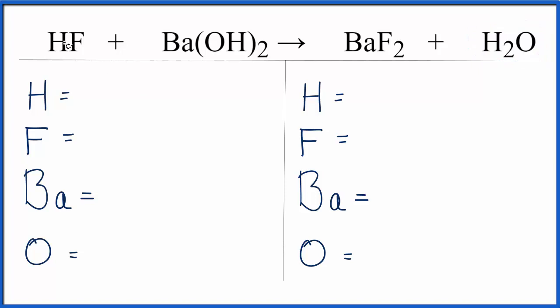Let's count the atoms on each side. We have one hydrogen here, and we have this hydrogen here. The two is applied to everything in the parentheses, so two times one gives us two hydrogens for a total of three hydrogen atoms. One fluorine, one barium, and the two applies to everything, so two times one equals two oxygen atoms.